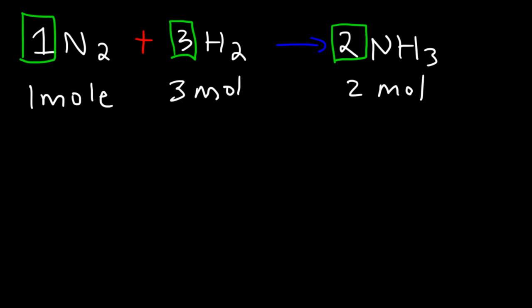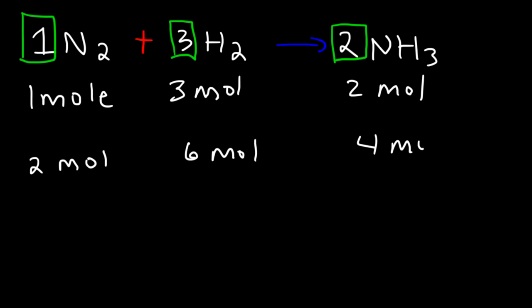That's the ratio, but it doesn't have to be these exact numbers. For example, you can multiply everything by 2, so 2 moles of nitrogen gas reacts with 6 moles of hydrogen gas to produce 4 moles of ammonia. Likewise, 3 moles of N₂ reacts with 9 moles of H₂ to produce 6 moles of NH₃.